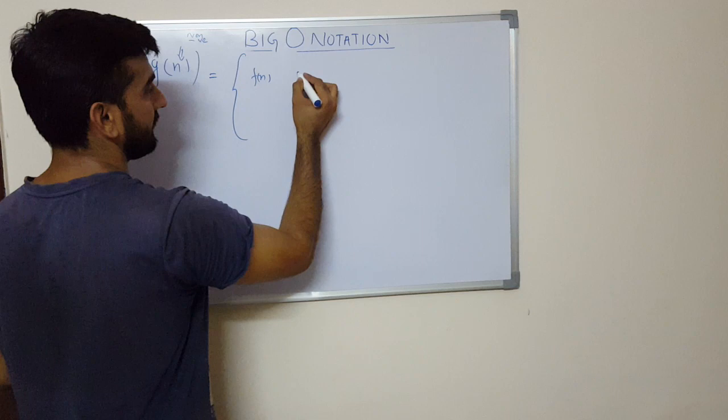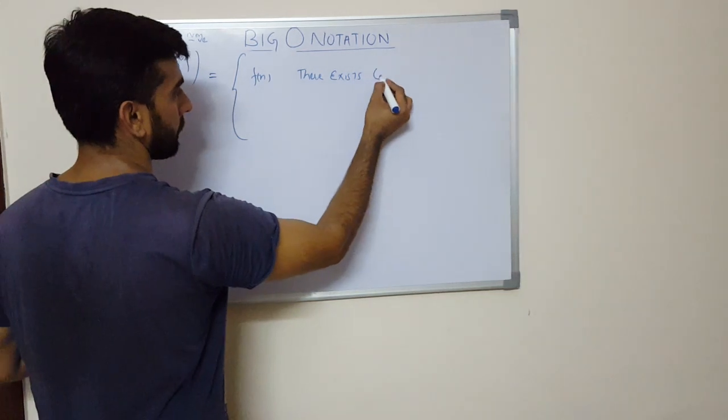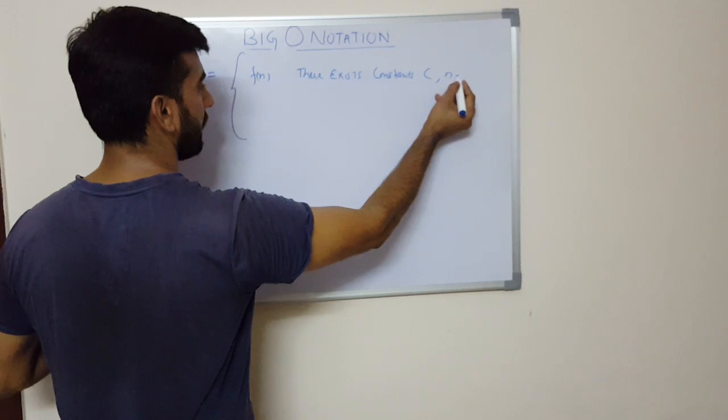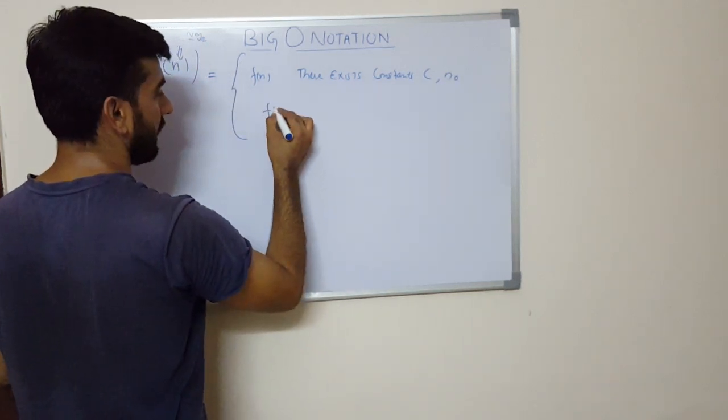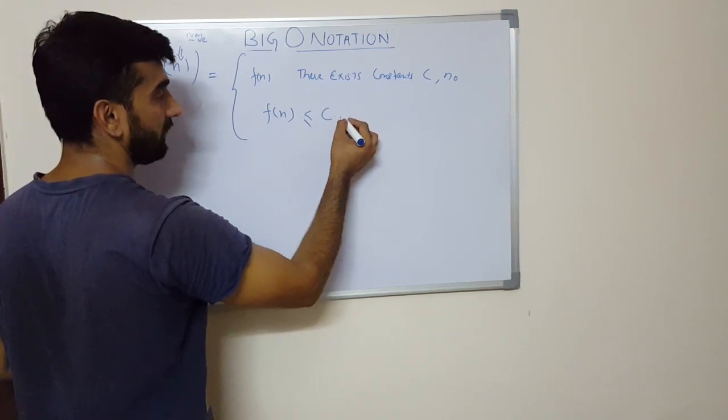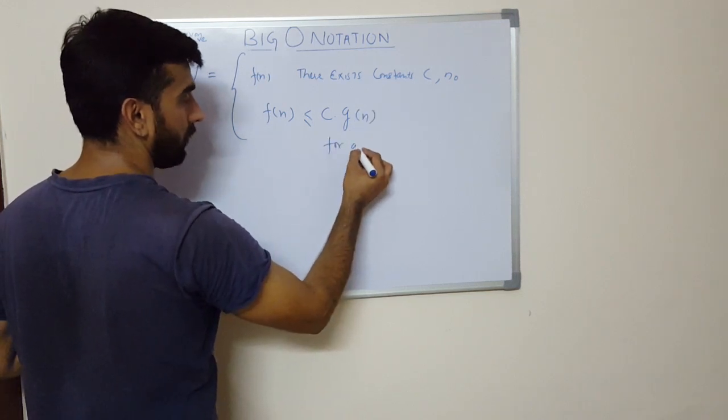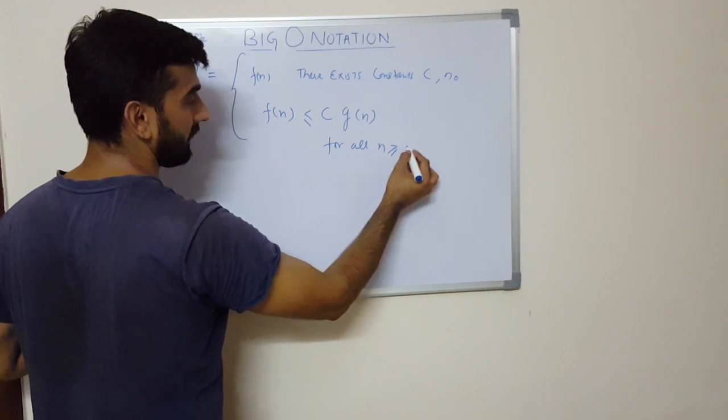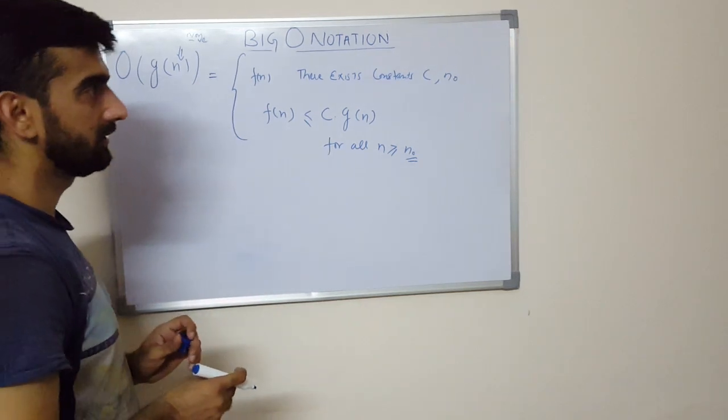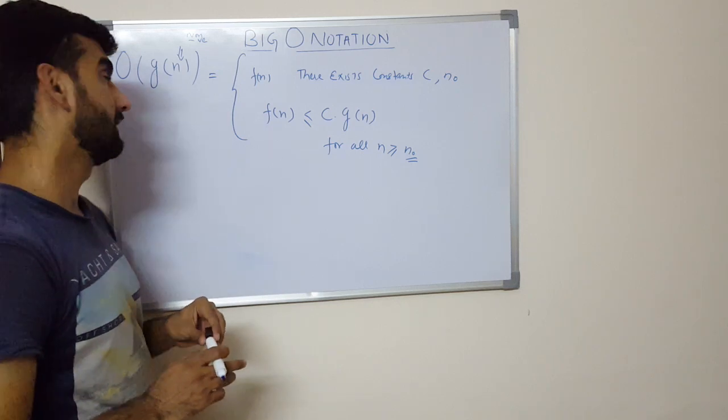Such that there exists constants c and n0, such that f(n) is always less than or equal to c times g(n) for all the values of n which are greater than n0. So this is the whole definition part of Big O notation, which is quite lengthy and may become messy if we do not consider some examples here.